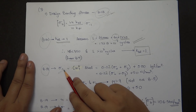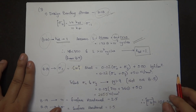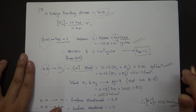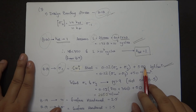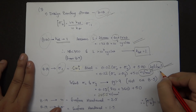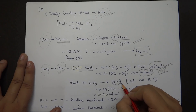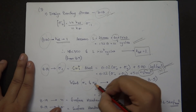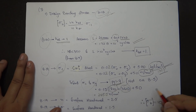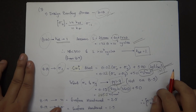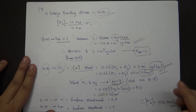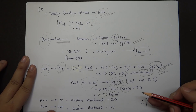From page 8.19, we calculate Sigma_{-1}. The material is cast steel, so I'll use the formula: 0.22 × (Sigma_U + Sigma_Y) + 500. From page 1.9, Sigma_U is 710 and Sigma_Y is 360, giving Sigma_{-1} = 285.5 Newton per mm square.